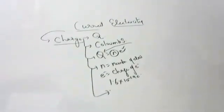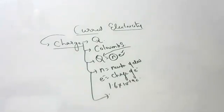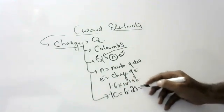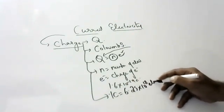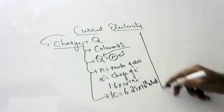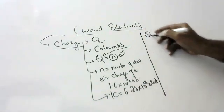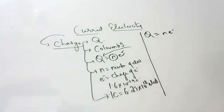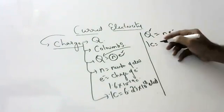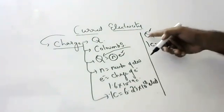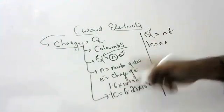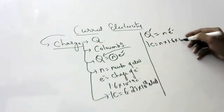A very famous and important question: one Coulomb will have how many electrons? This question is very important. We know Q equals NE. The question is, if Q is one Coulomb, find N. E is the constant 1.6 into 10 to the power of minus 19.